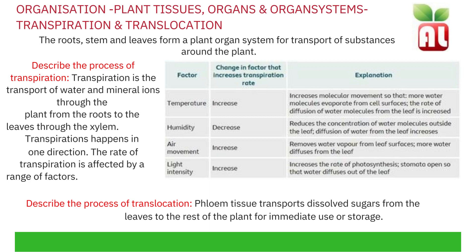The rate of transpiration is affected by a range of factors including temperature, humidity, air movement and light intensity. If there is a temperature increase, it increases the rate of transpiration as more water molecules evaporate from the cell surfaces. Humidity is the measurement of moisture in the air. As humidity decreases, this increases the rate of transpiration — if there is very dry air and therefore decreased humidity, the reduced concentration of water molecules outside the leaf causes the diffusion of water from the leaf to increase.